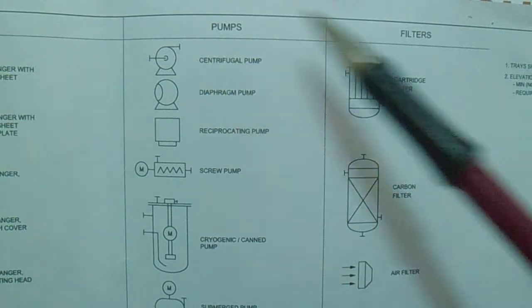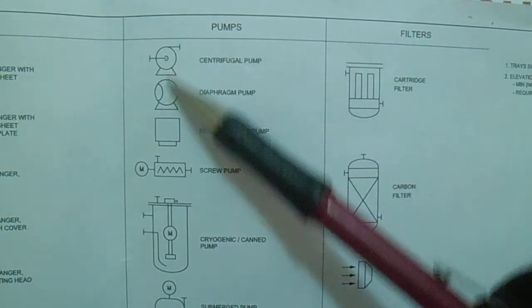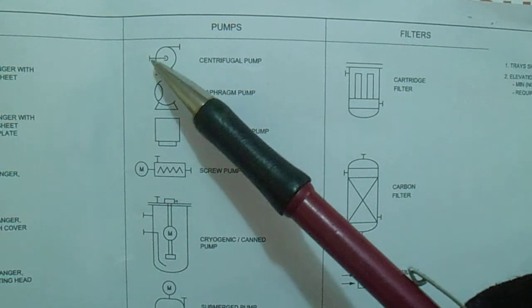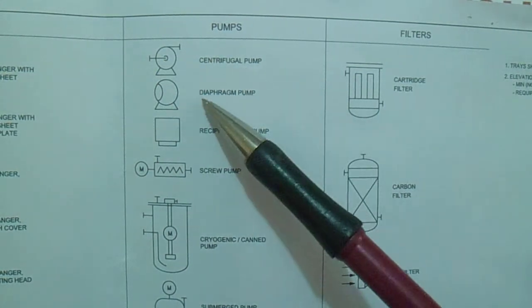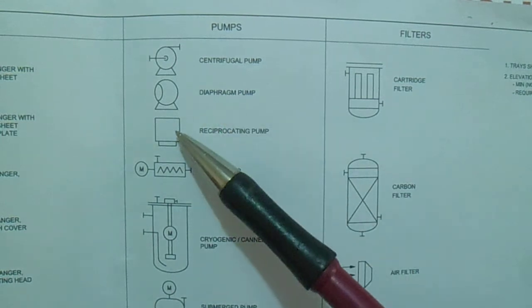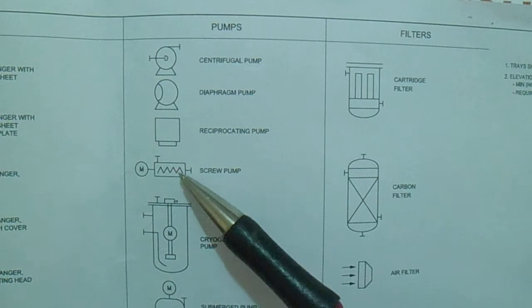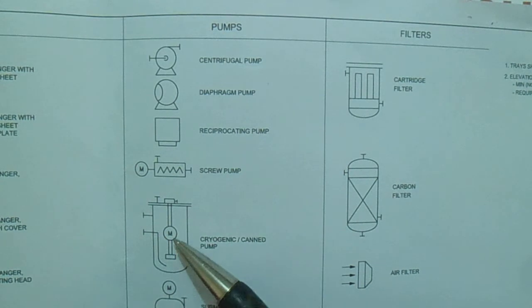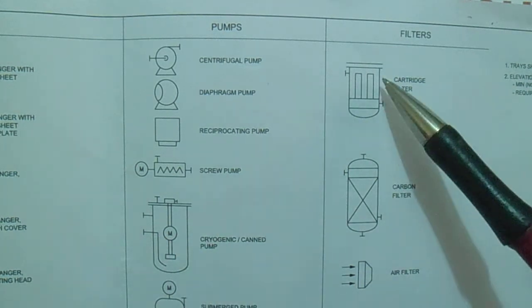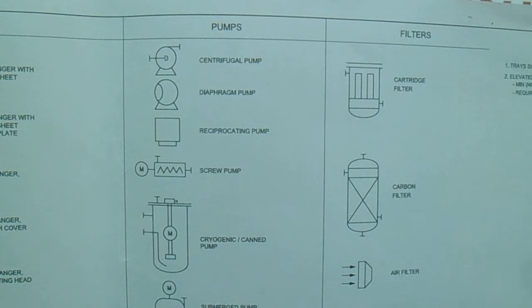For pumps, the symbols include: centrifugal pump, diaphragm pump, reciprocating pump, screw pump, and cryogenic can pump.